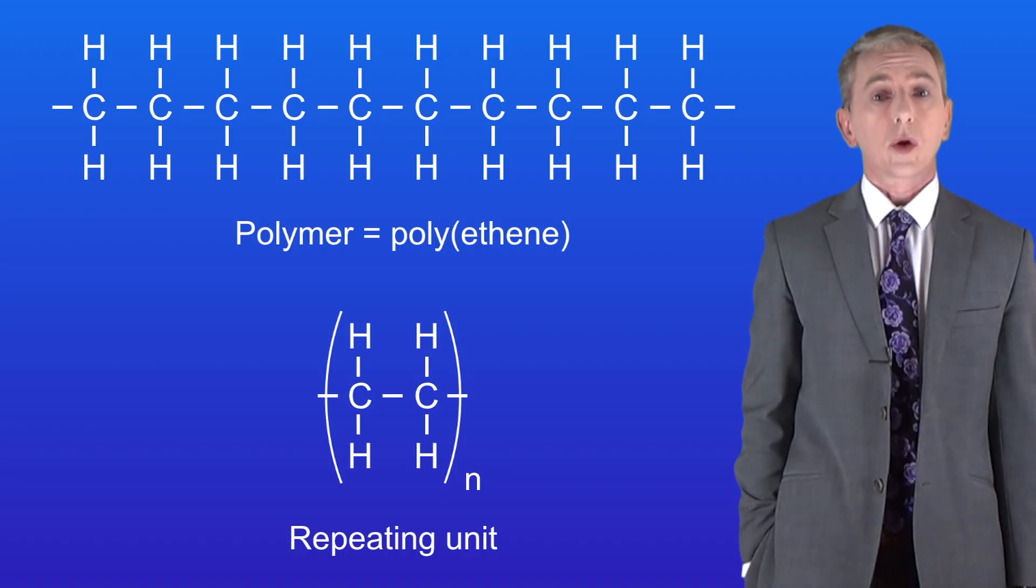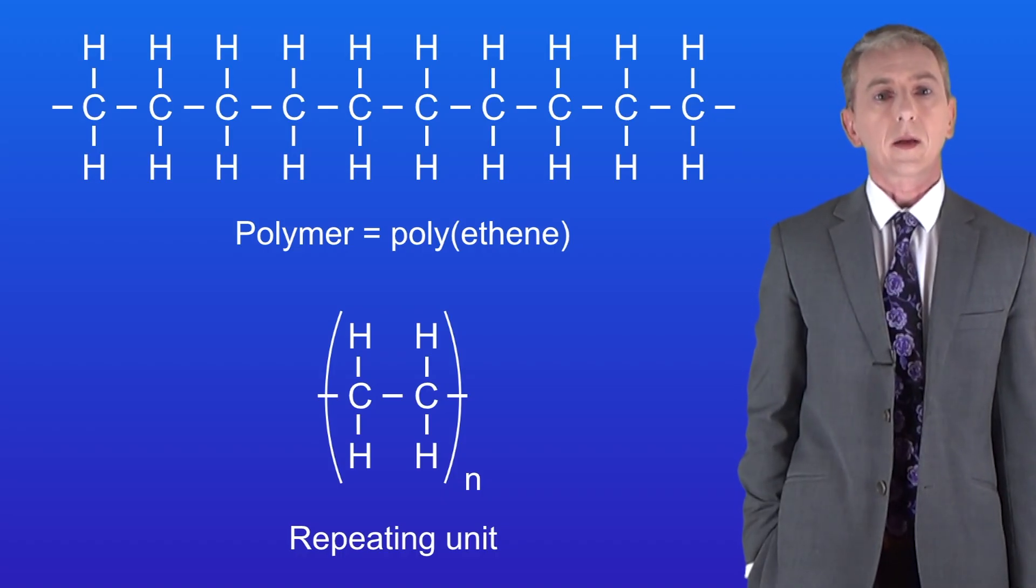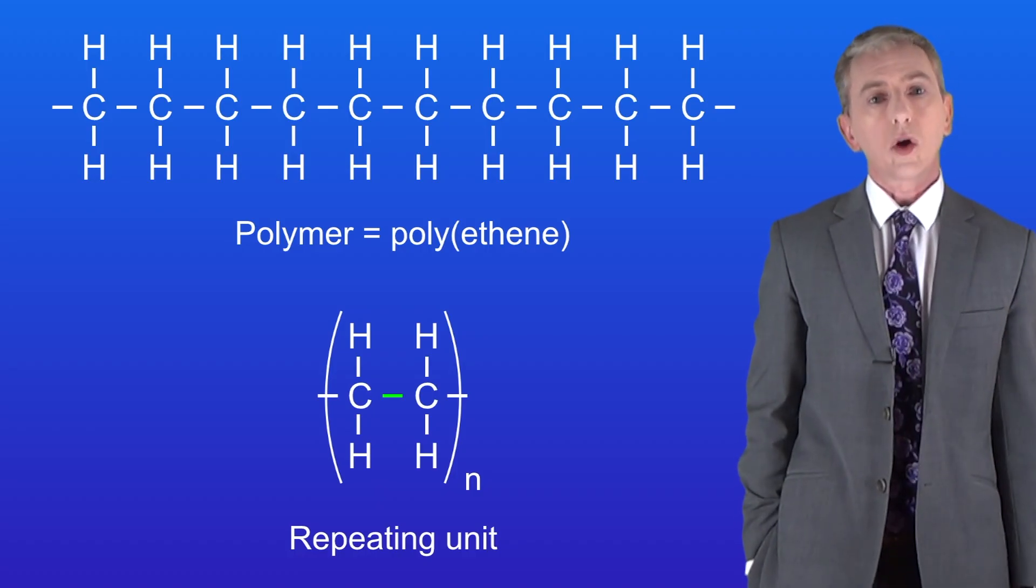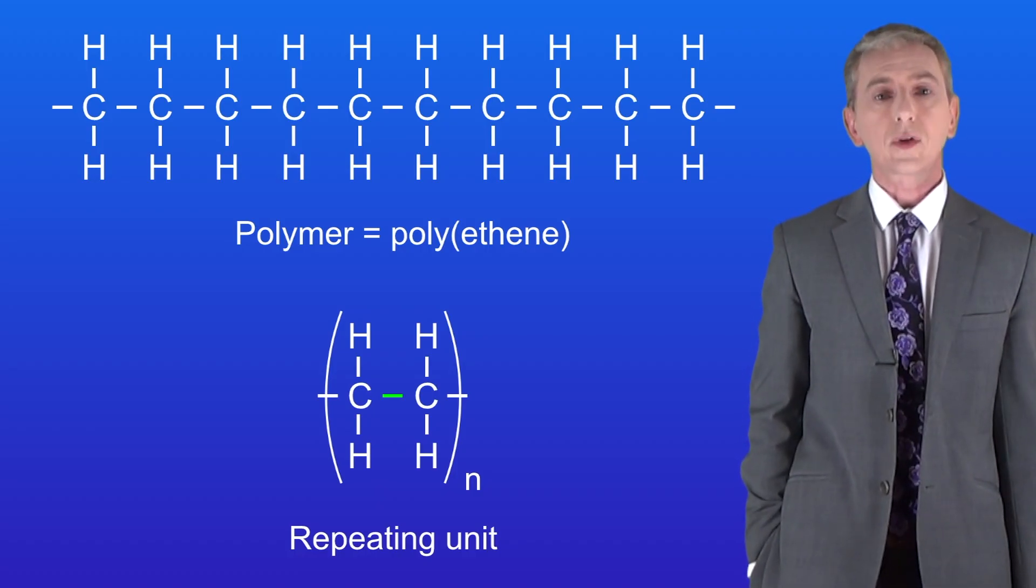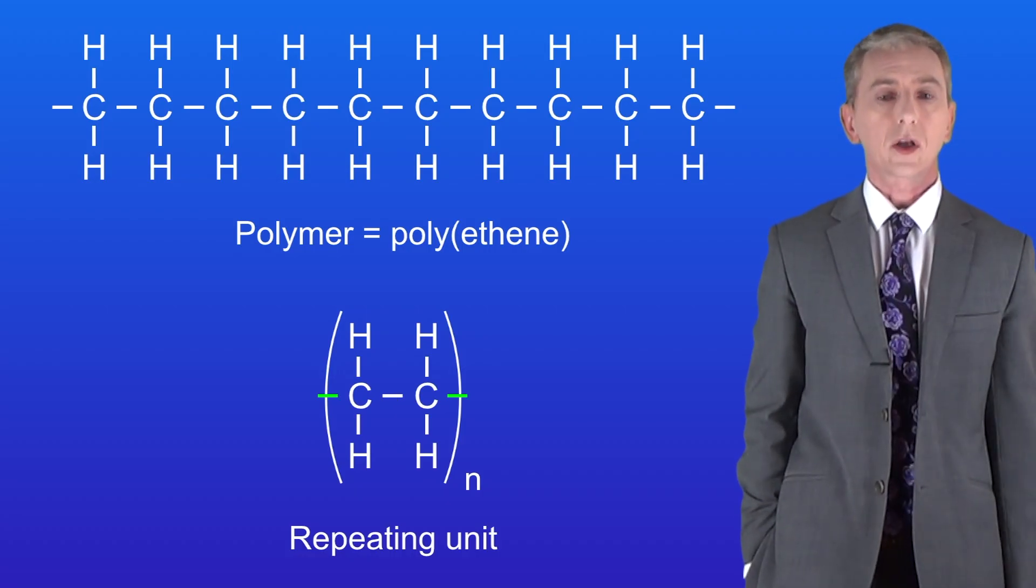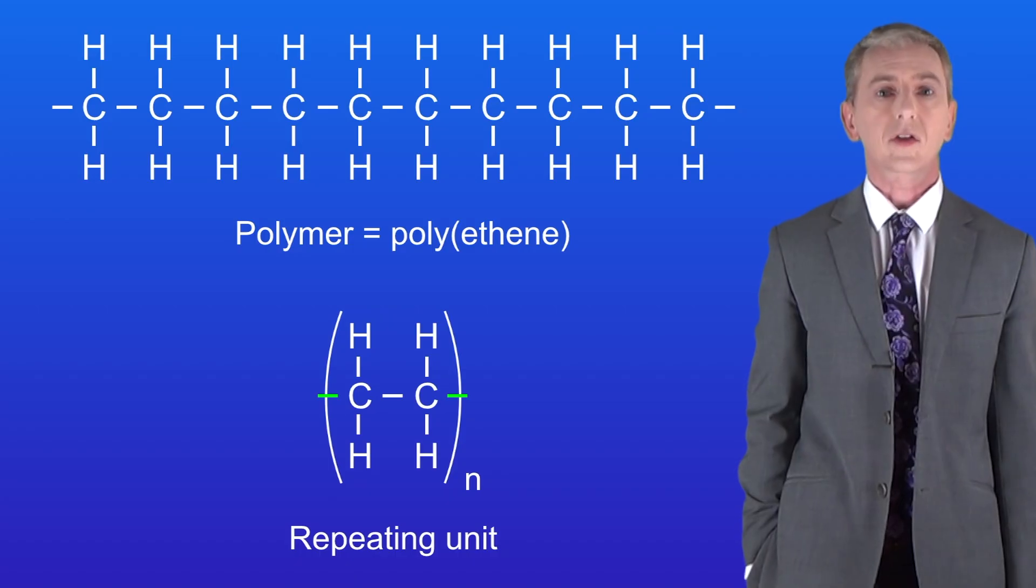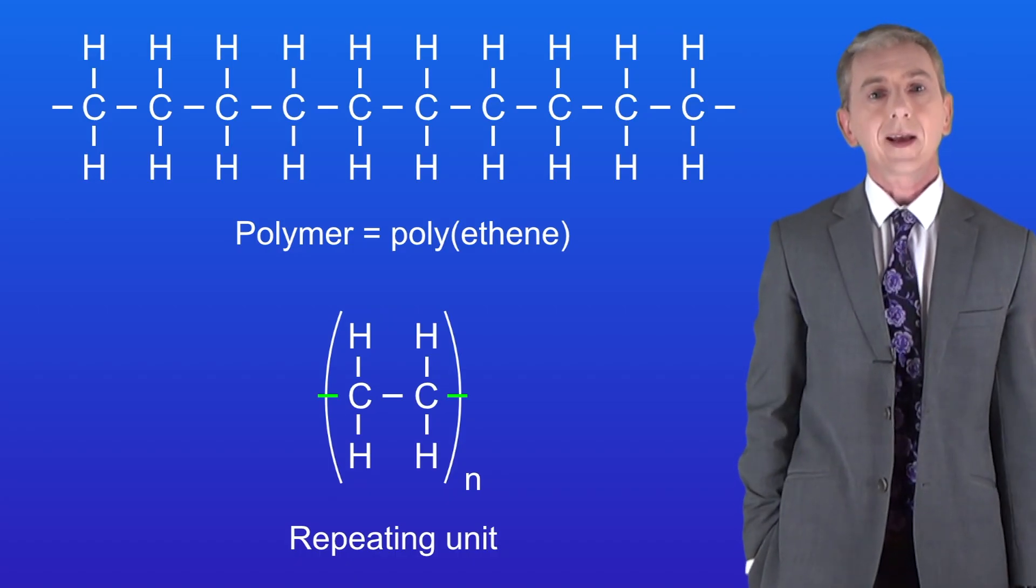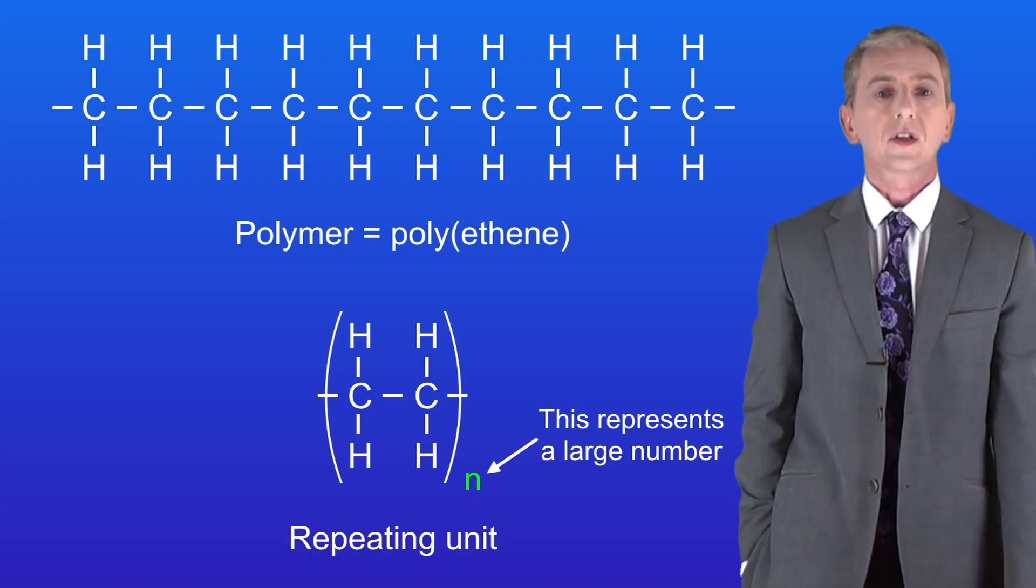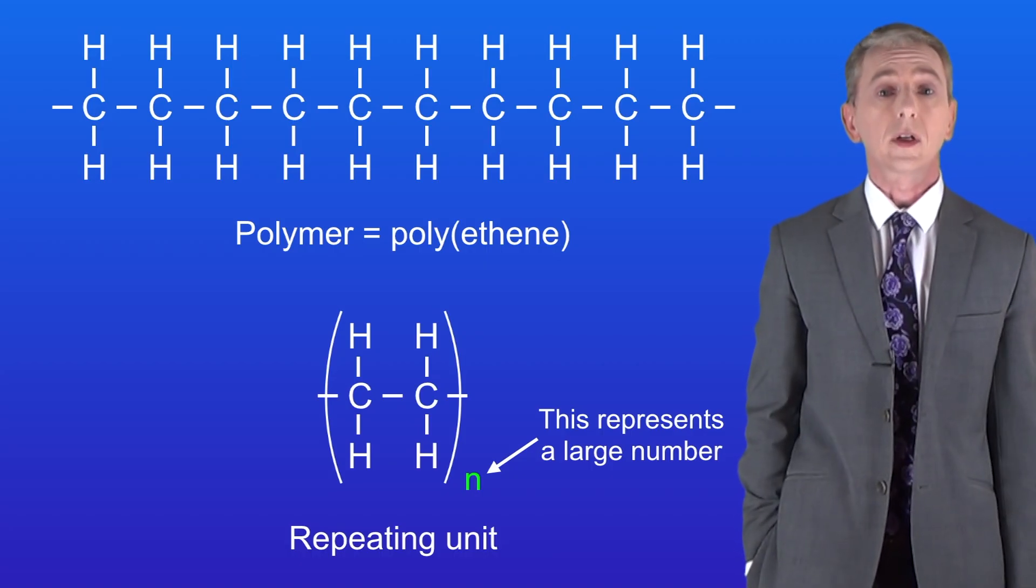Firstly, remember that it shows a single carbon-to-carbon covalent bond and we can see that here. Secondly, the covalent bonds on either side have to extend out of the brackets like this. This tells us that the polymer molecule extends out in both directions. Lastly, the little n here tells us that the polymer contains a very large number of repeating units joined together. n just represents a large number.